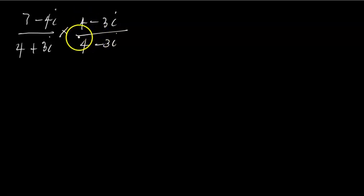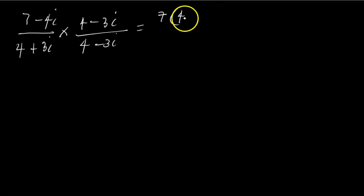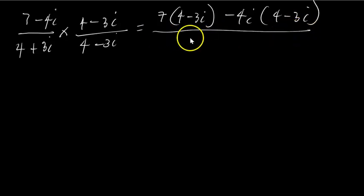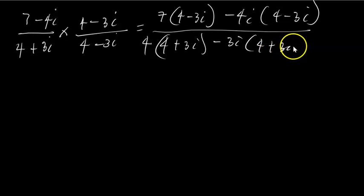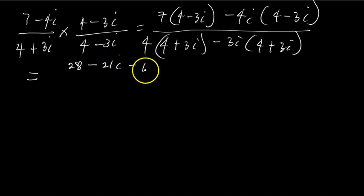We've only multiplied by one because (4 - 3i) / (4 - 3i) equals one. Now this will be the same thing as, using our distributive property like we did in multiplication: 7 × (4 - 3i) minus 4i × (4 - 3i), all over 4 × (4 - 3i) plus 3i × (4 - 3i). Let's open the brackets.